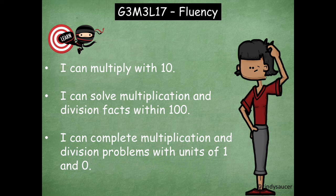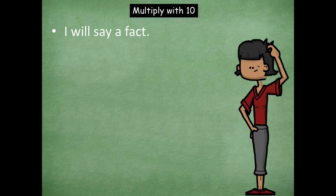And then the last learning goal says I can complete multiplication and division problems with units of one and zero. So for that one specifically, our focus is going to be on multiplication and division problems that have one or zero as one of the numbers within. So let's jump in and get started with our first activity. So we'll be talking about multiplying with 10.